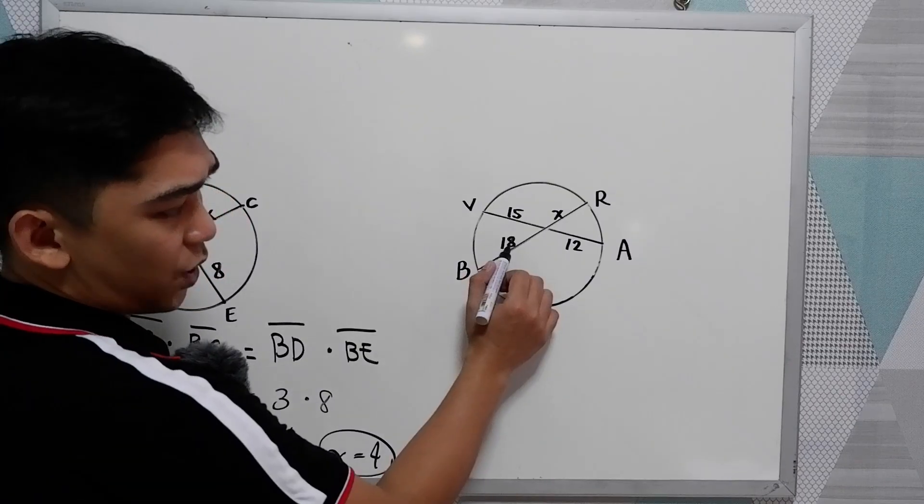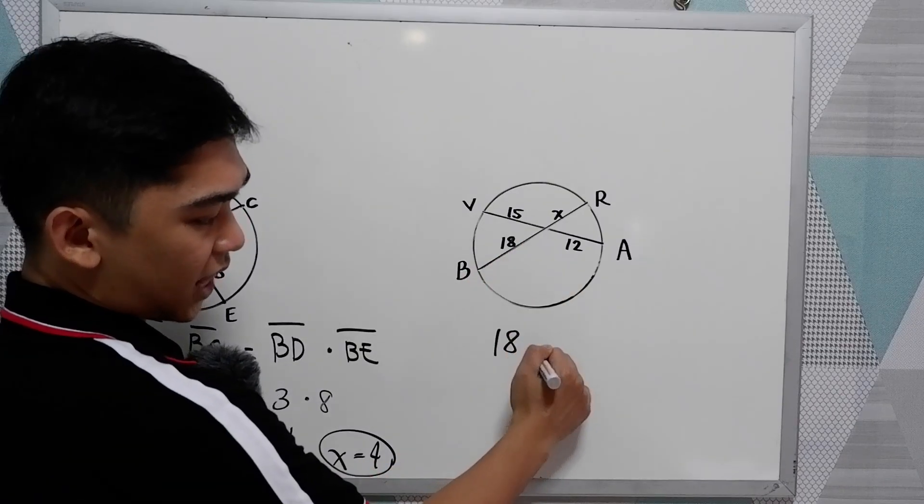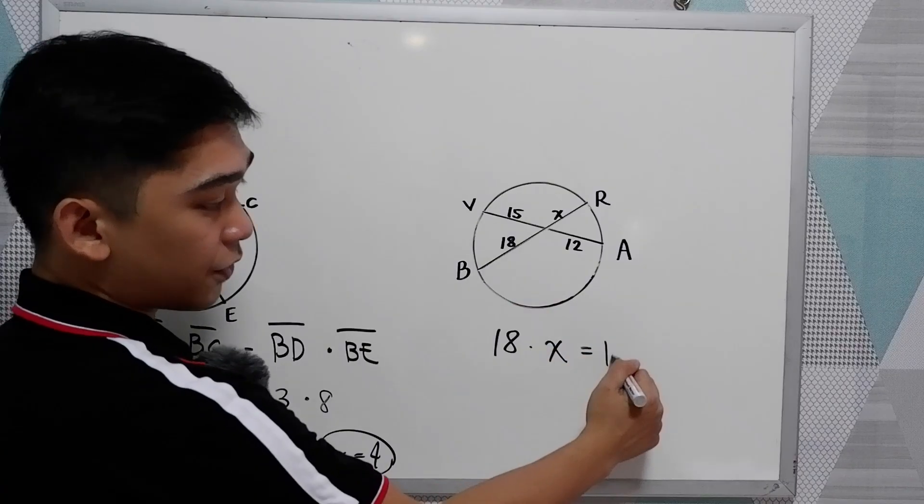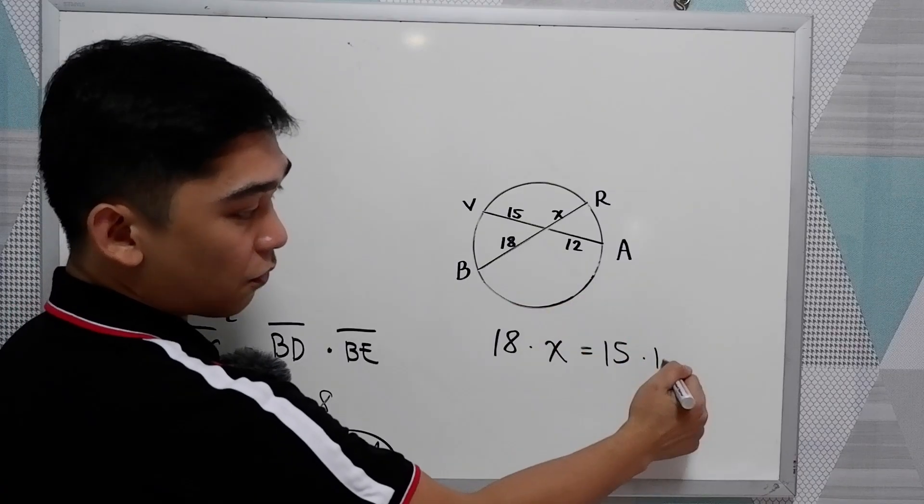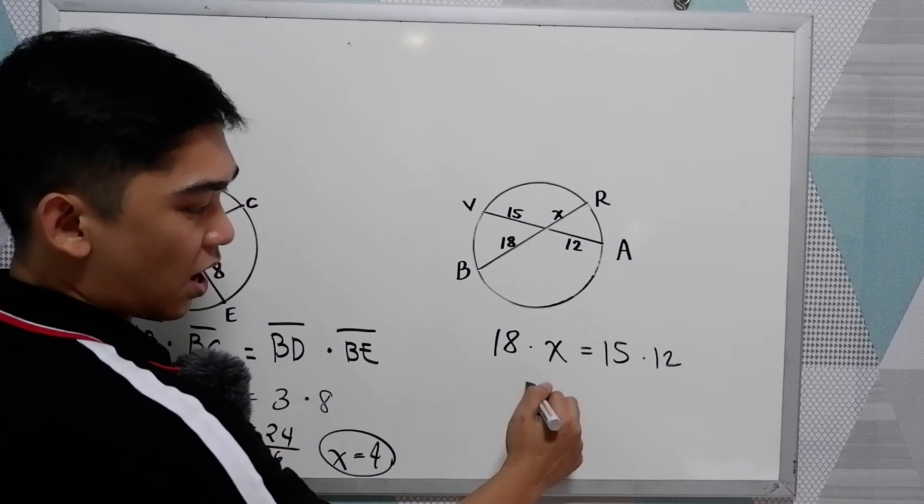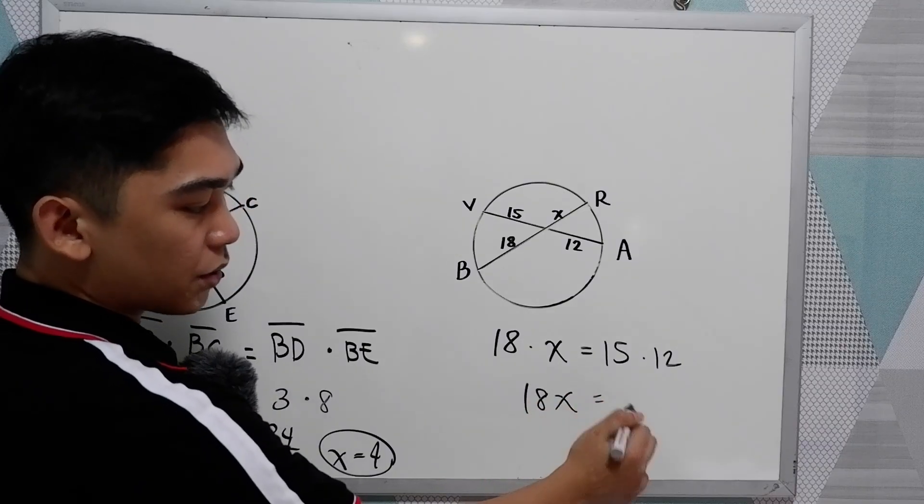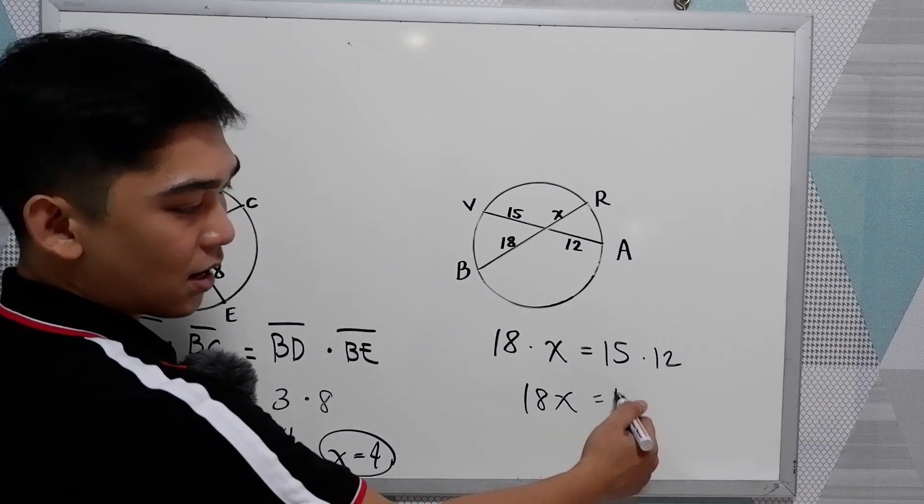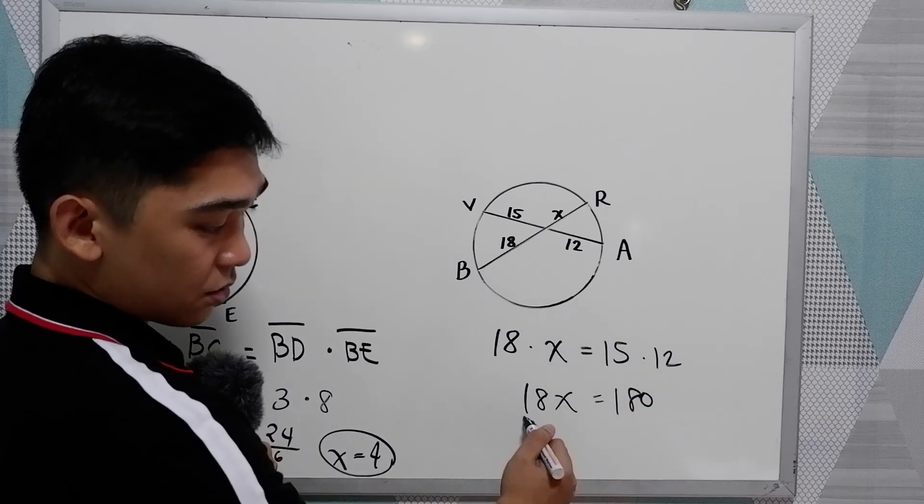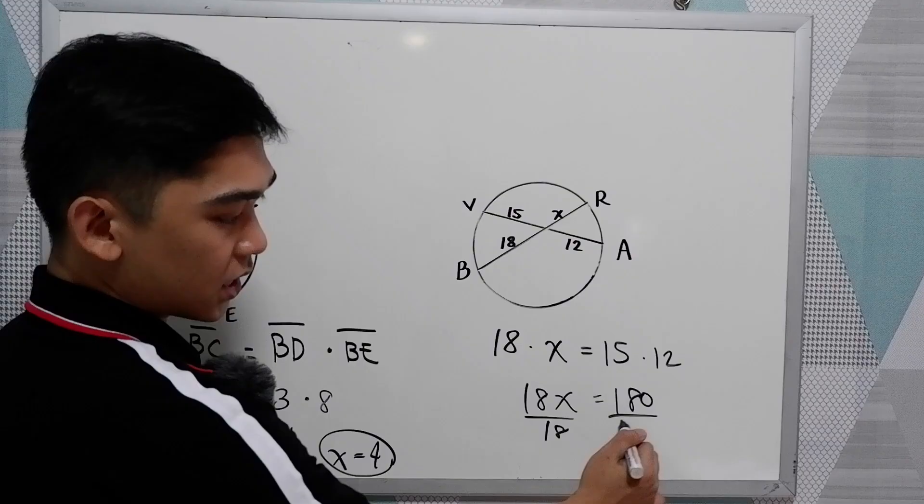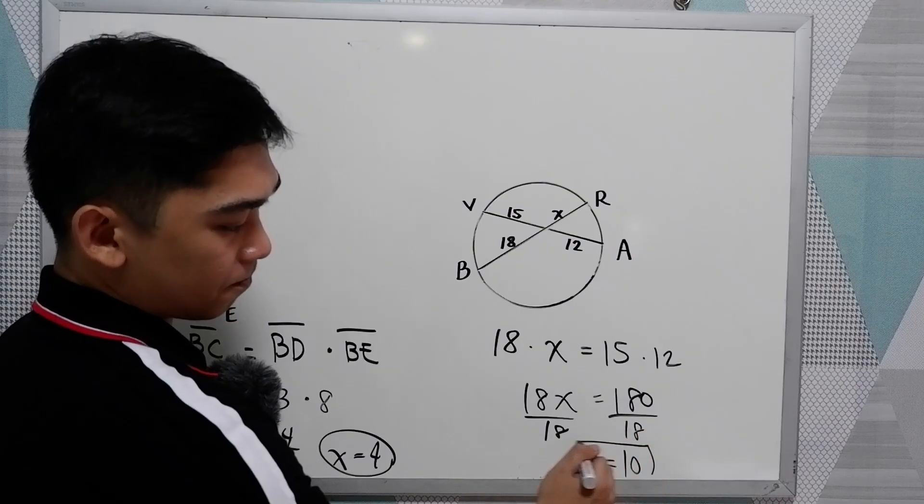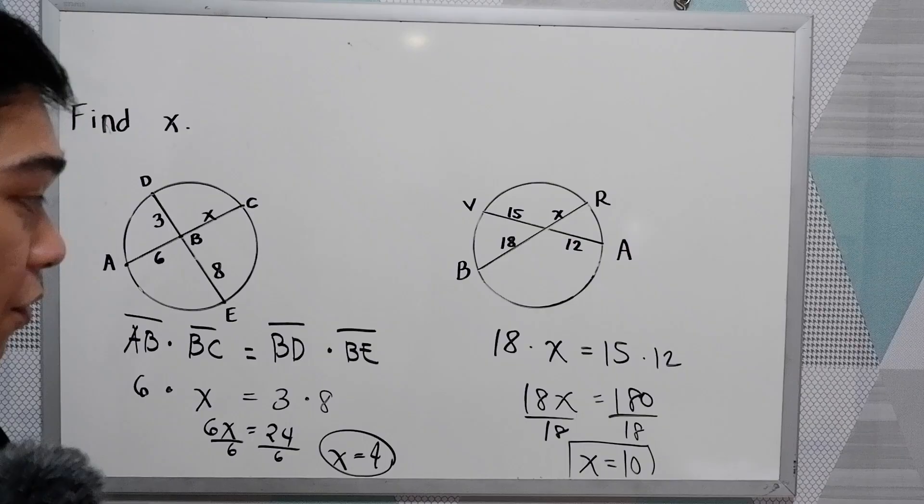Let us try to use the shortcut. We have 18 times X is equal to 15 times 12. So, 18X is equal to 180. Divide by 18, X is equal to 10. That would be the value of our X.